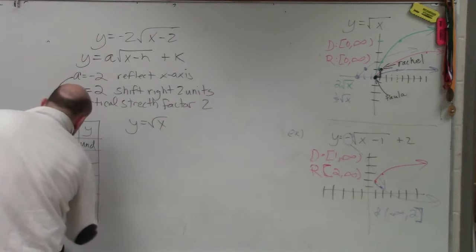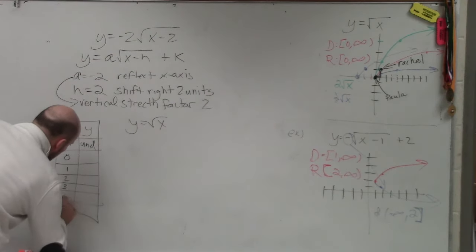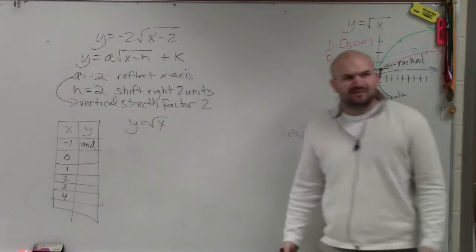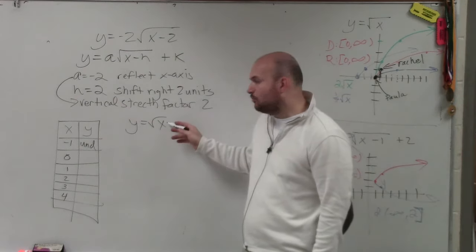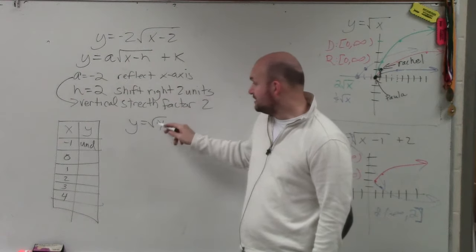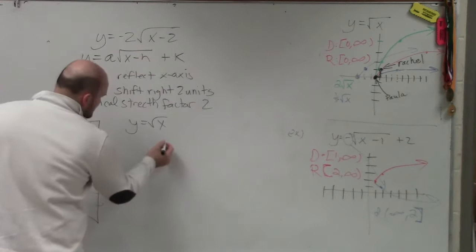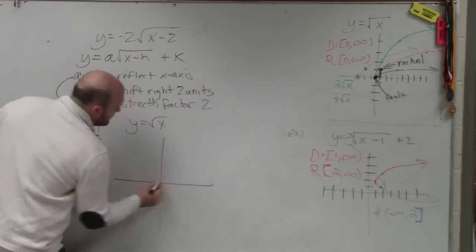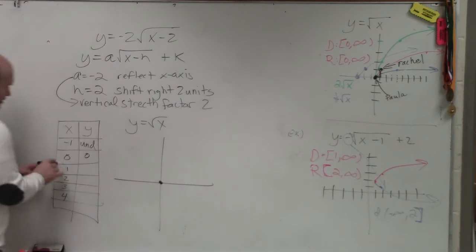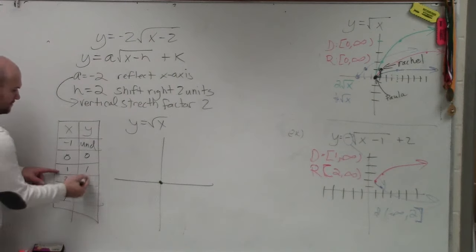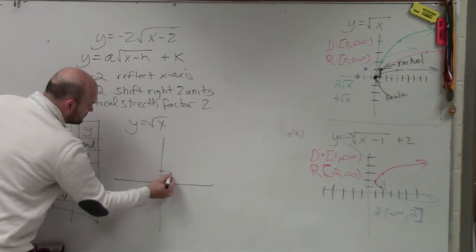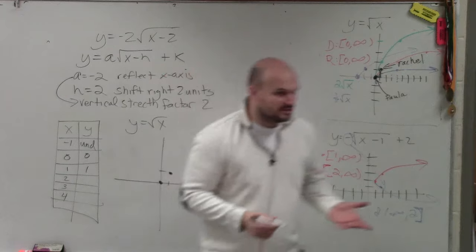Now, I would not choose the numbers 2 and 3. Because can you take, when you plug in 1, let's plug them in. 0, square root of 0 is what? 0. So to plot my graph, 0, 0. When I plug in 1, the square root of 1 is 1. So over 1, up 1. Does everybody say that?